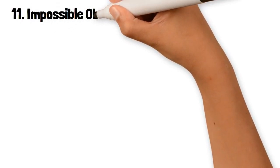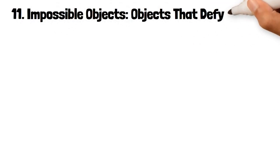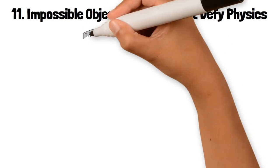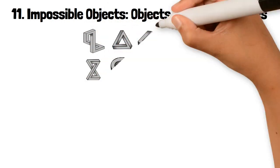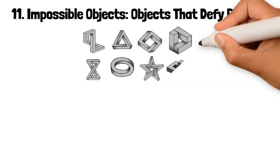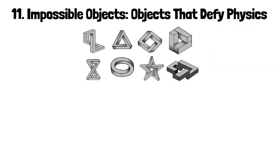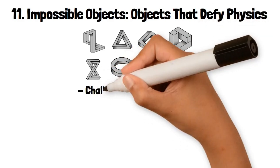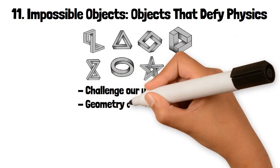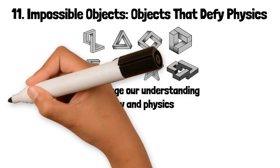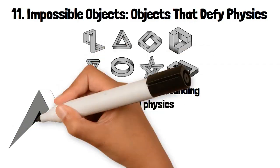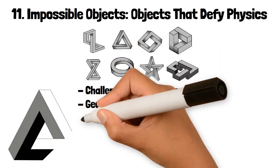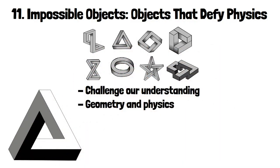11. Impossible Objects: Objects that Defy Physics. Impossible objects are images of objects that cannot exist in three-dimensional space, even though they appear plausible at first glance. These illusions challenge our understanding of geometry and physics. The Penrose Triangle or Tribar is a classic example where a triangular shape seems to connect in an impossible loop.